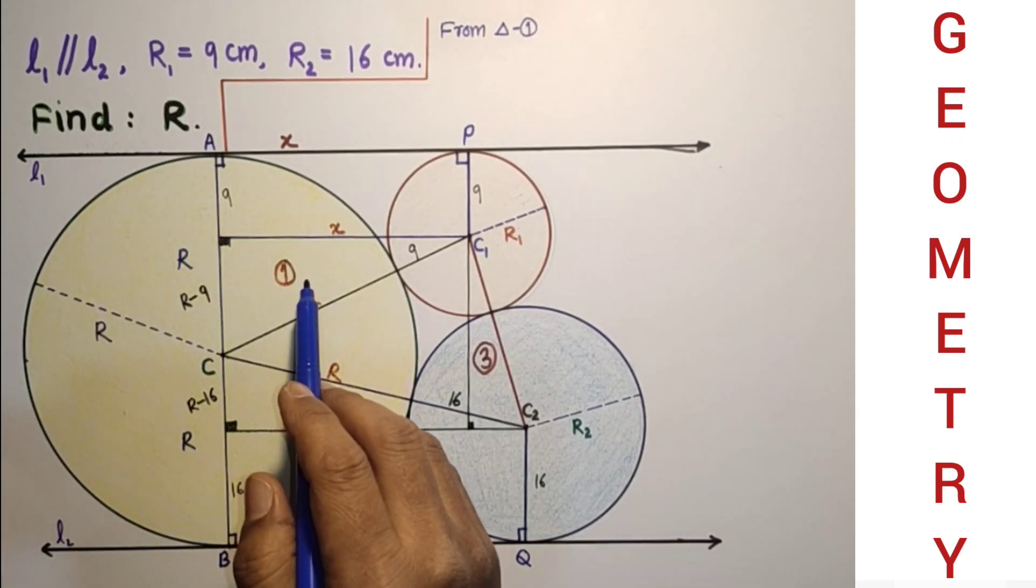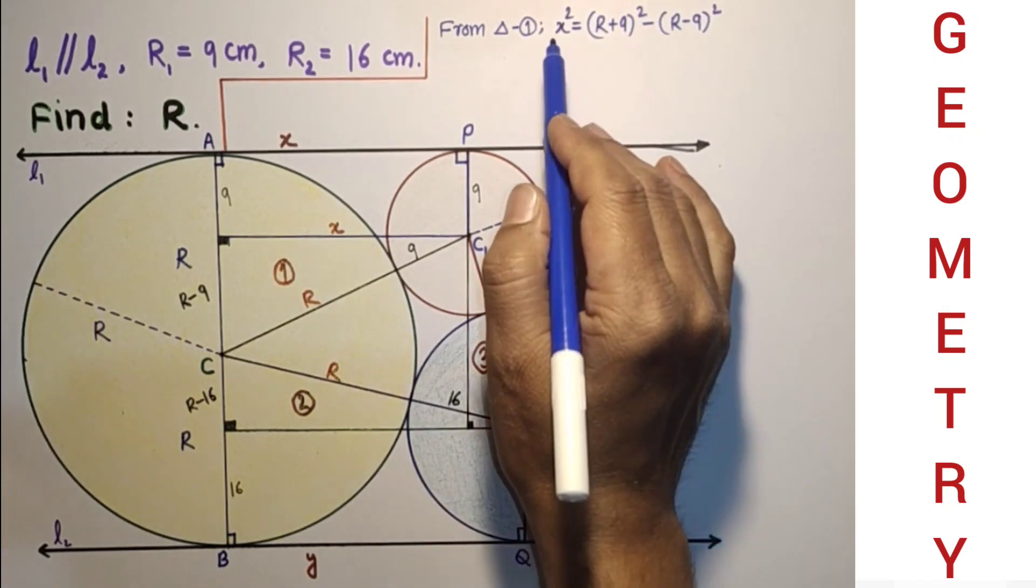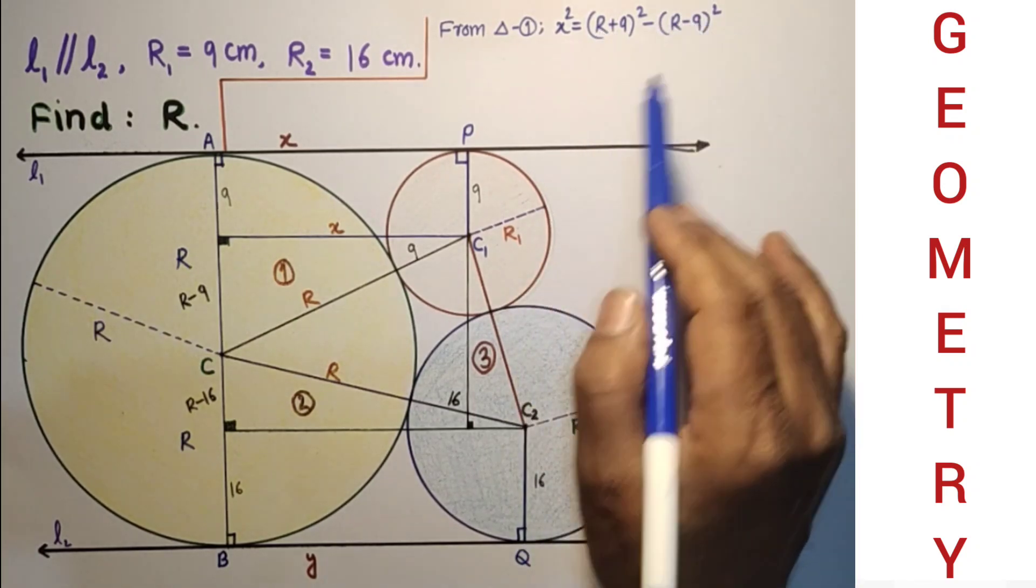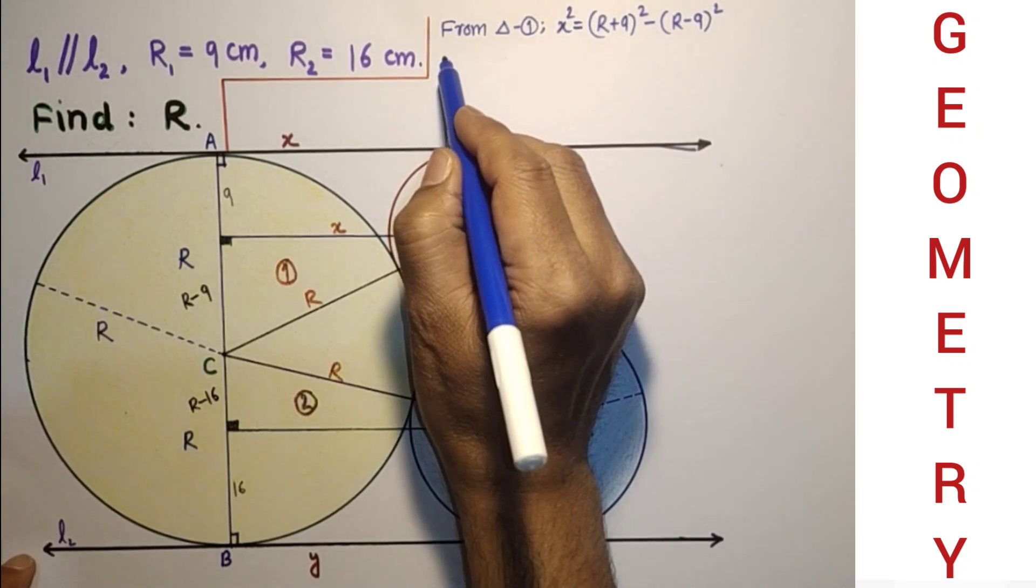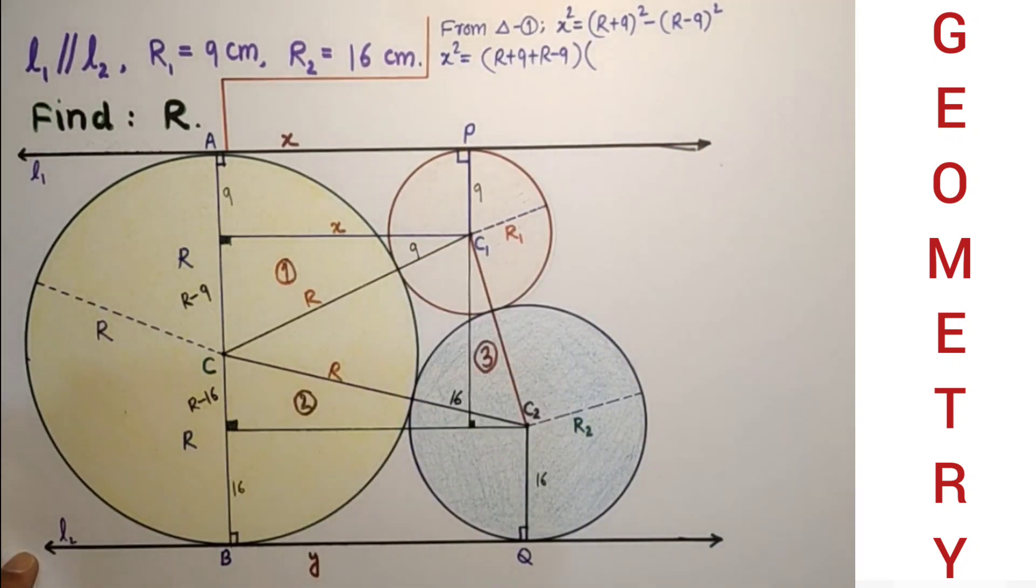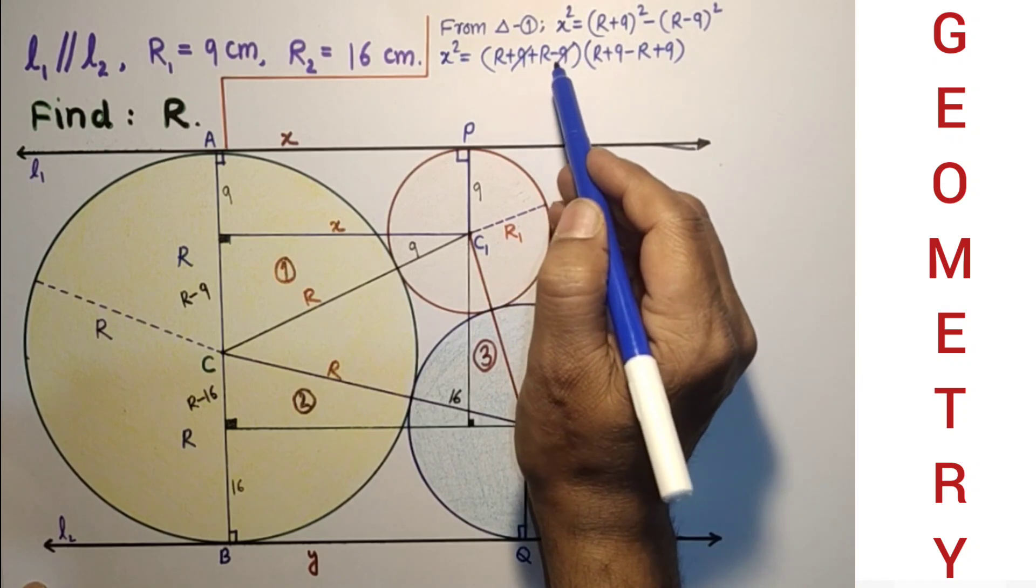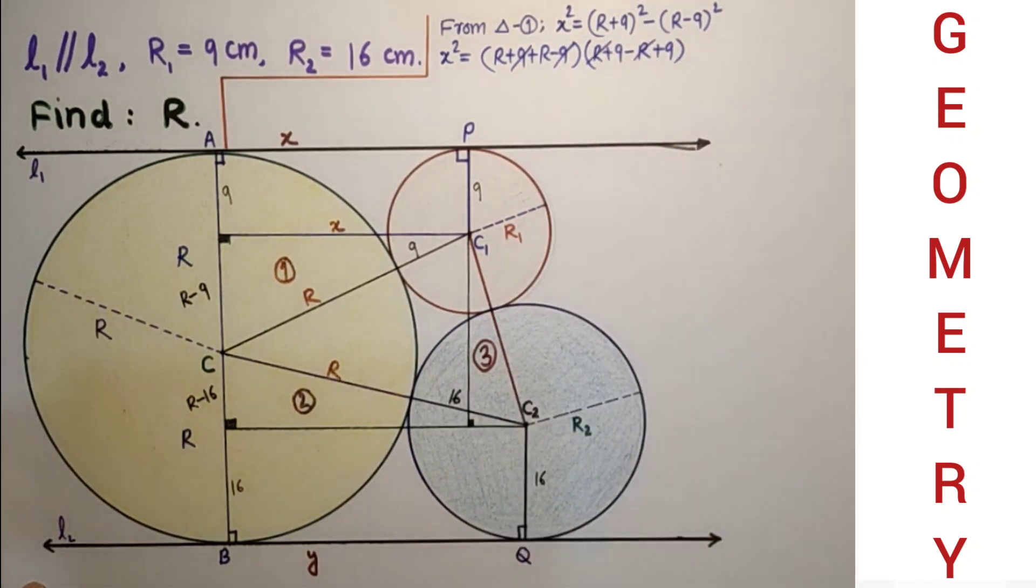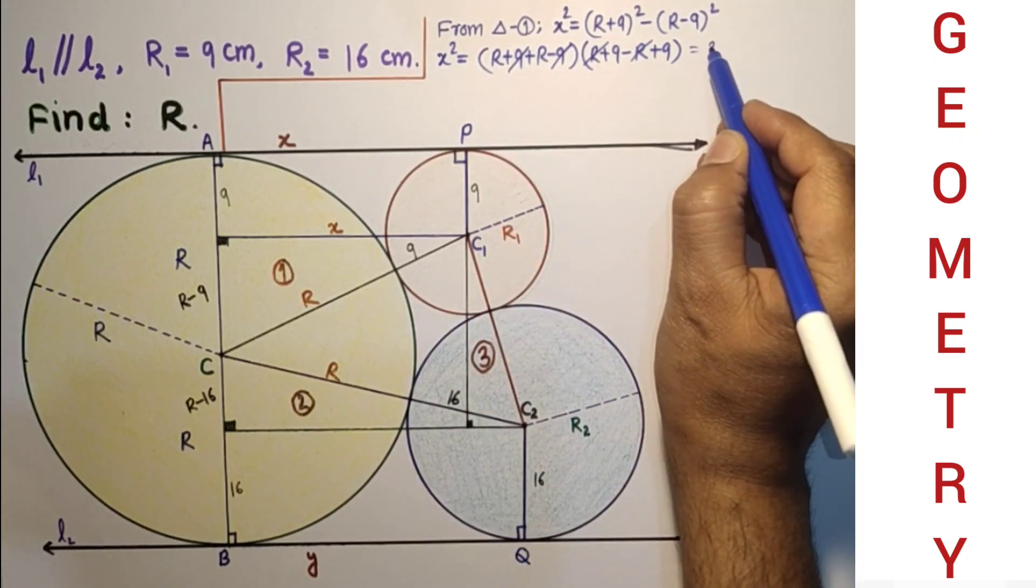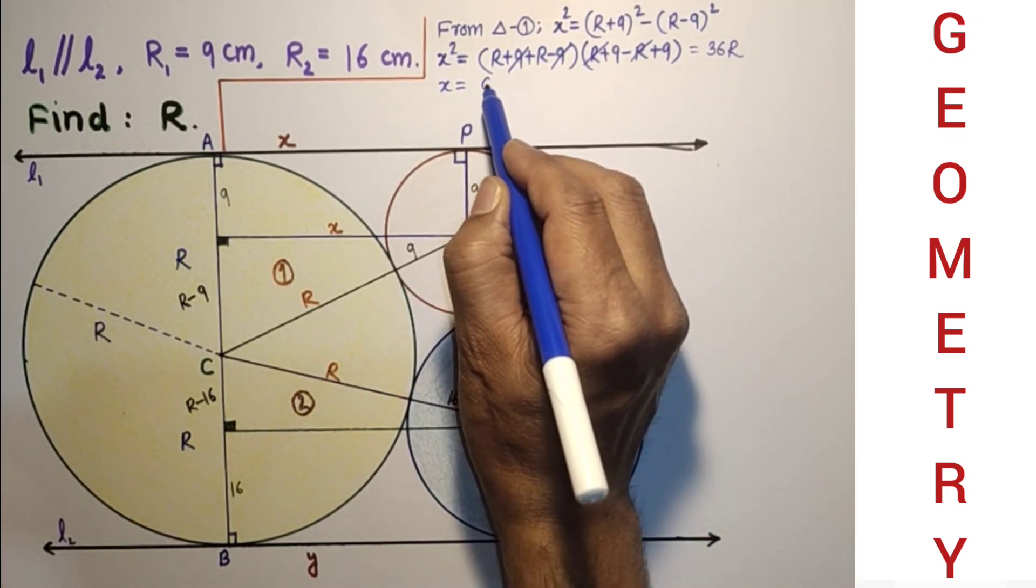That is equal to A² minus B² type. So A plus B in one bracket and B in other bracket. So that will be X² equals sum of these two and this minus this in second bracket. Minus 9 plus 9 will get cancelled, minus R plus R will get cancelled, so 2R into 18 which is 36R. So we found X equals square root of 36R which is 6√R.